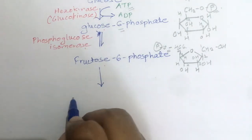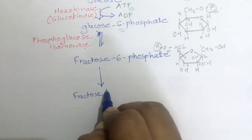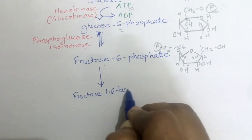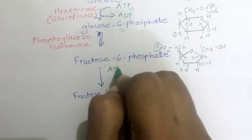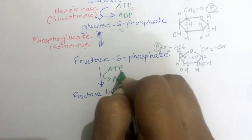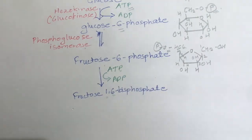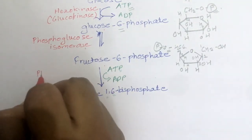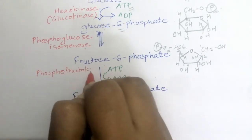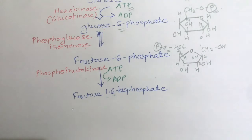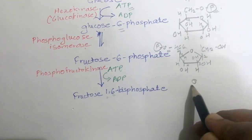The next step is fructose-6-phosphate is converted to fructose-1,6-bisphosphate, where one more phosphate group is attached to the fructose-6-phosphate. Earlier, the phosphate group was attached to the sixth carbon; now one more phosphate group will be attached to the first carbon. The enzyme responsible for this is phosphofructokinase — again a kinase, because kinase is responsible for the addition of a phosphate group.